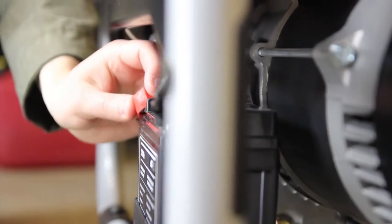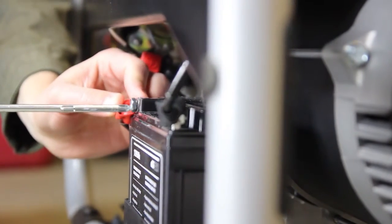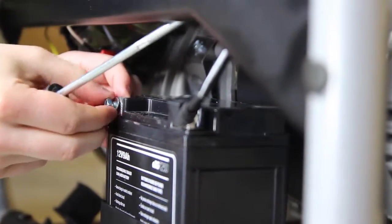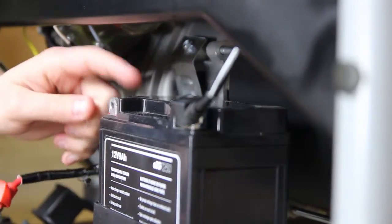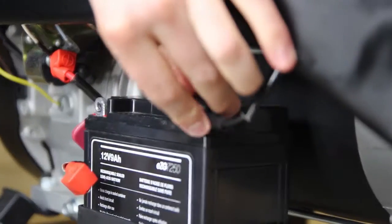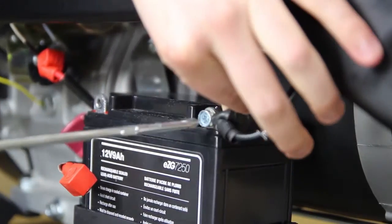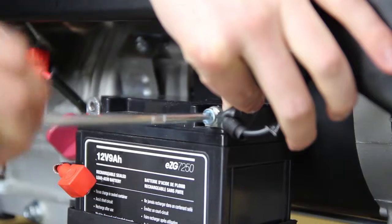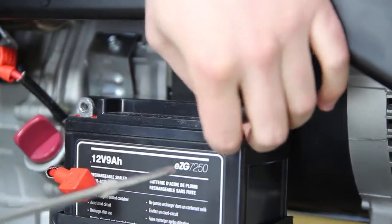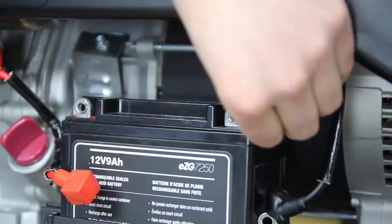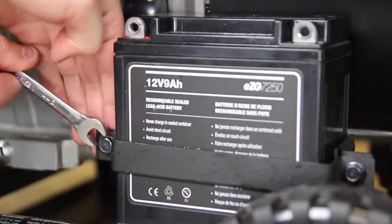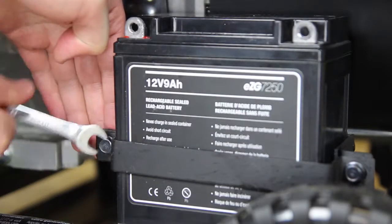Disconnect the red cable from the positive battery terminal. Disconnect the black cable from the negative battery terminal. Remove the bracket. Place the nuts, bolts, and bracket in a safe place so you don't lose them.